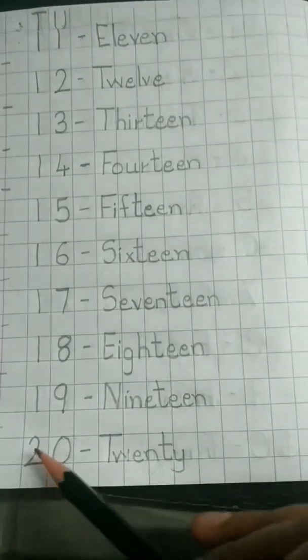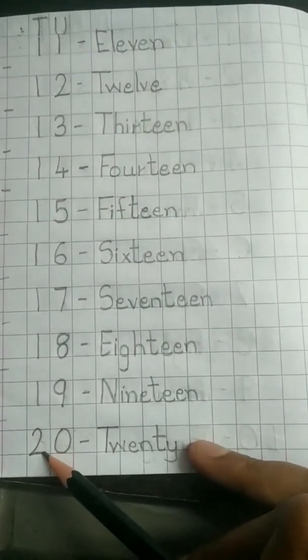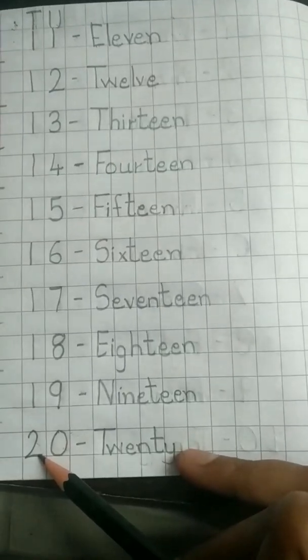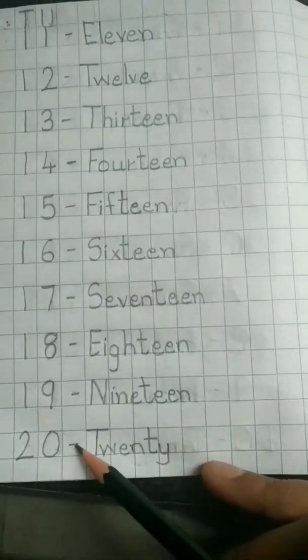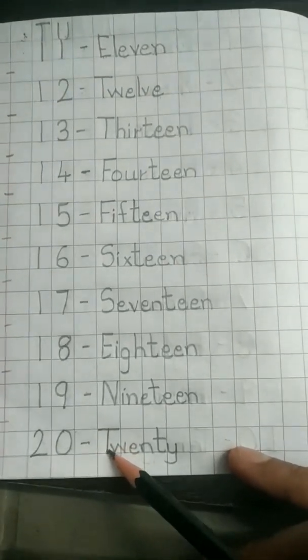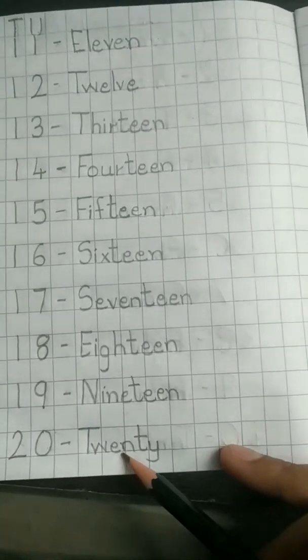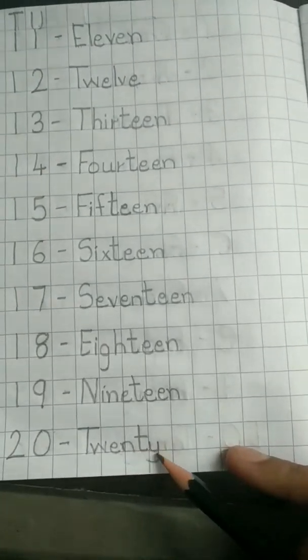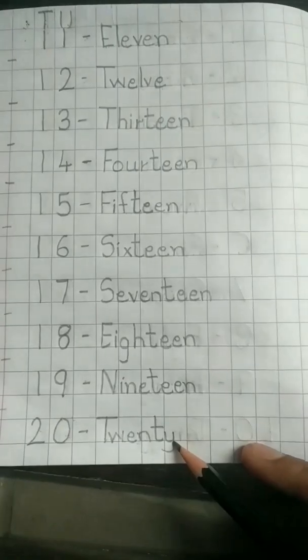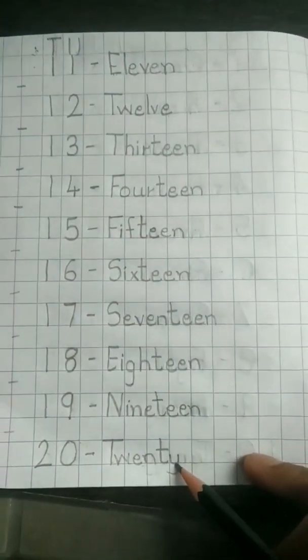So children, last number 20 on this page, 2 tens and 0 units. Then we put a dash and the spelling of 20 is T, capital T, W, E, N, T, Y. 20. Now after writing till 20, we have to carefully start writing from 21.